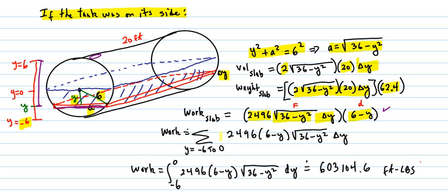Your work is that expression, the work of the slabs added up from y equals negative 6 to 0, because it's half full and those y values only go from negative 6 to 0 to account for all the water that's there. So then you put that in and run the integral and you get this amount of foot pounds, which is less than pumping out half the water if it was vertical, which is interesting.